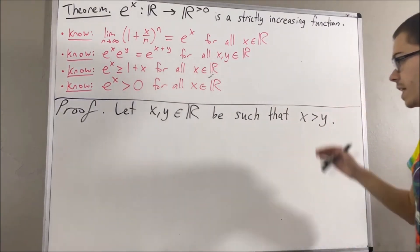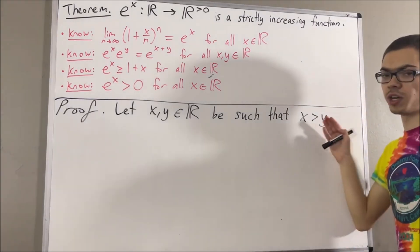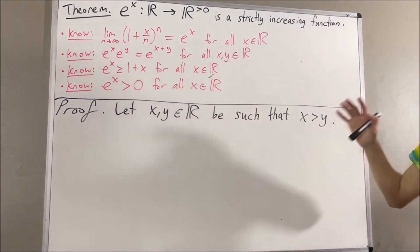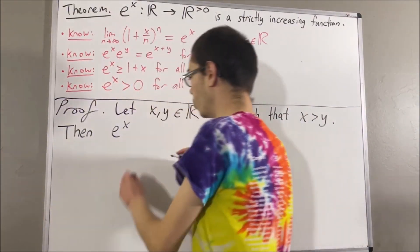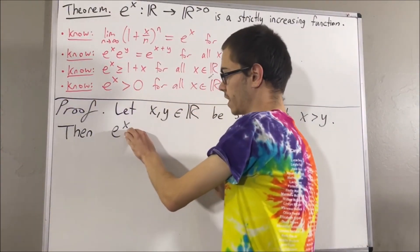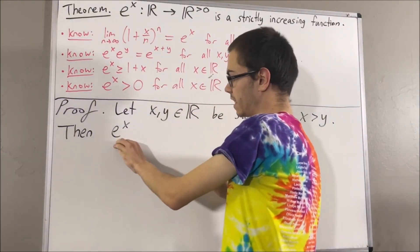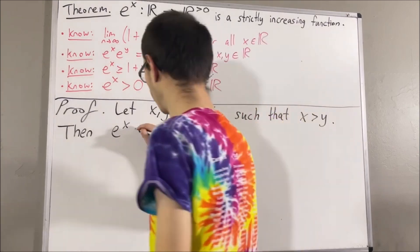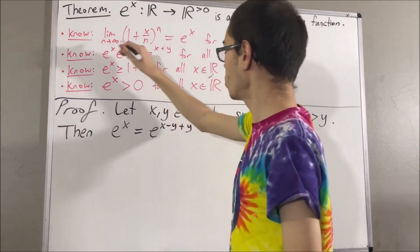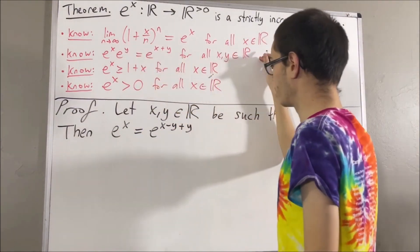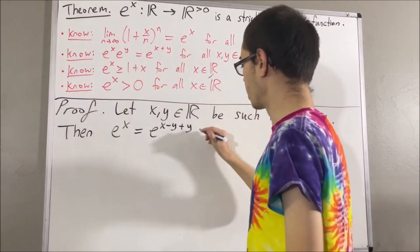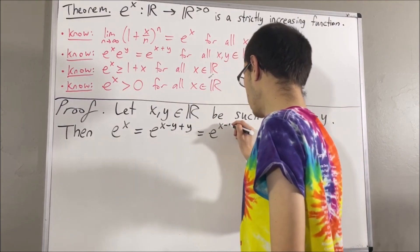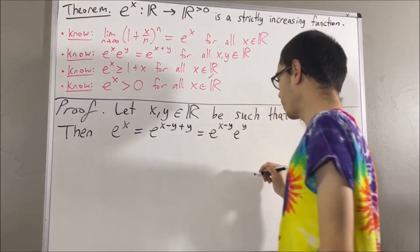From here, we want to show that e to the x is greater than e to the y. Notice, we can rewrite e to the x as e to the x minus y plus y. And by our first preliminary result, this is just e to the x minus y times e to the y.